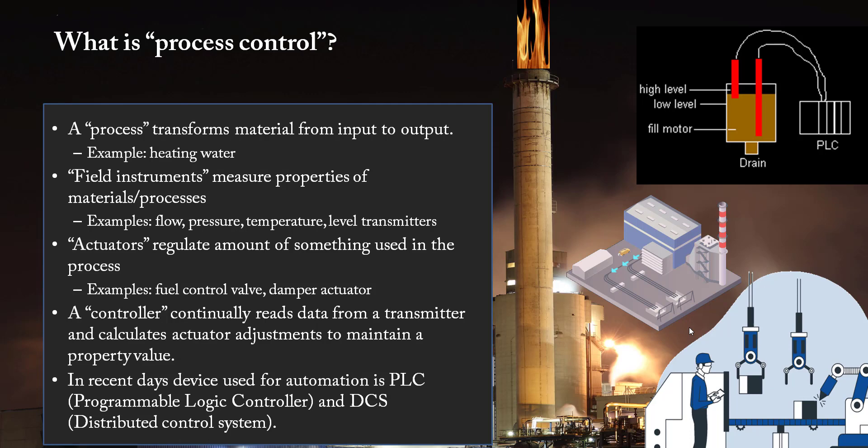So in that example, we have a sensor that senses the pain, and we have our controller that is our brain that gives the signal to the human body to remove the hand, and then we have actuator, our hand. If we use that analogy in understanding of process control or process automation, then I'm going to explain you. Field instruments measure the property of material or processes like flow, pressure, temperature, level.